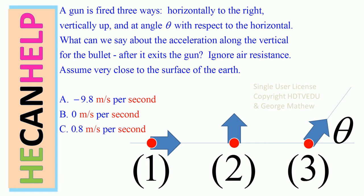What can we say about the acceleration along the vertical for the bullet after it exits the gun? Ignore air resistance, assume very close to the surface of the earth. Positive x is defined as to the right, and positive y is vertically up.